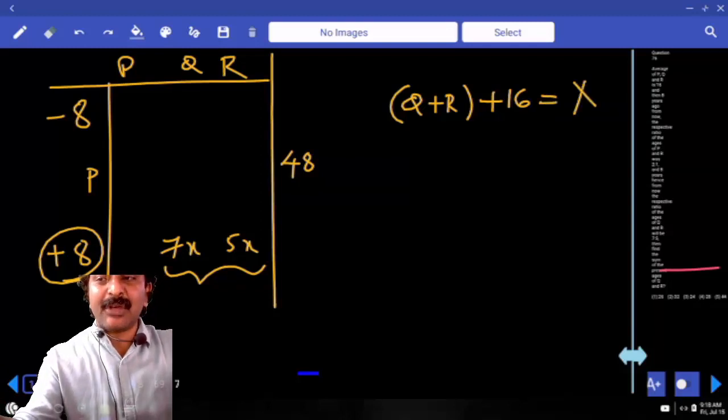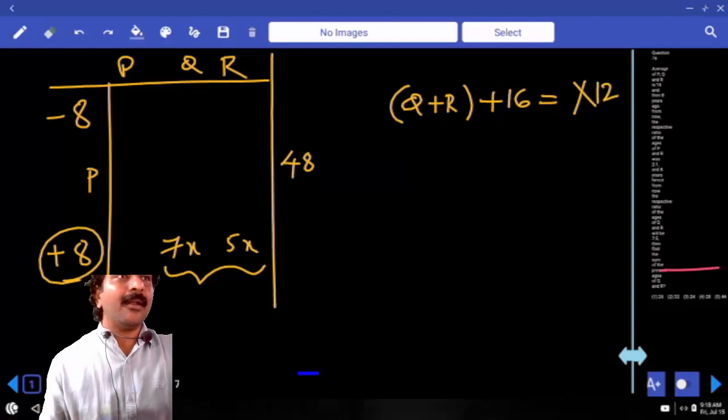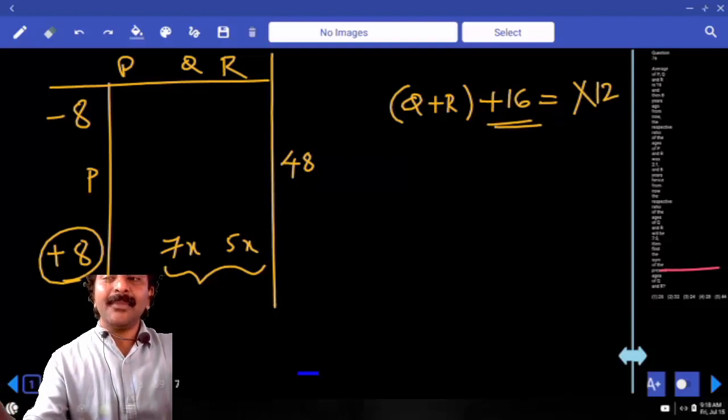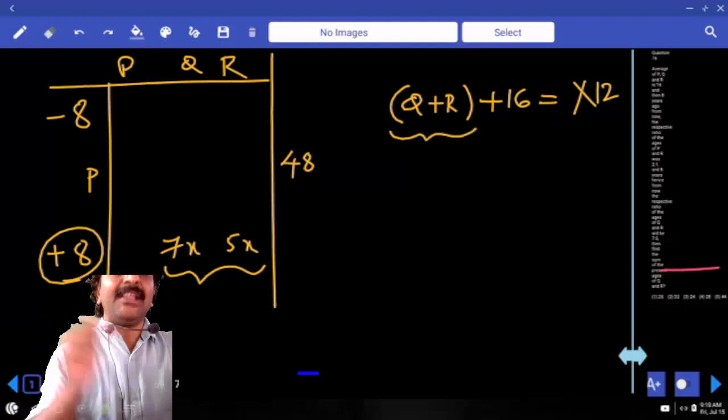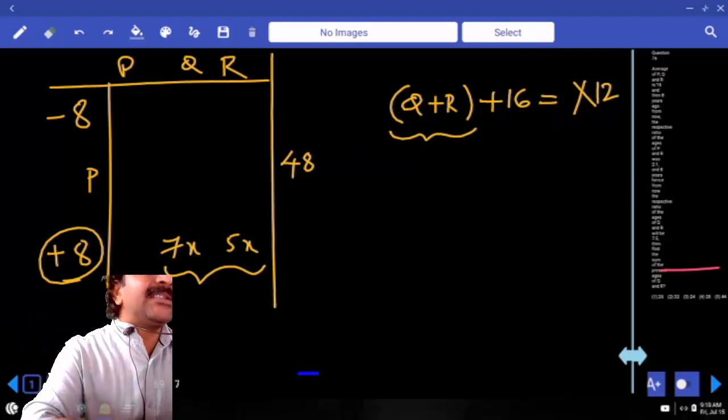12x in the sense 12 multiple only. After adding, that means to the present age of Q and R, when you add 16, it must be a multiple of 12. Correct?